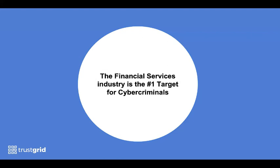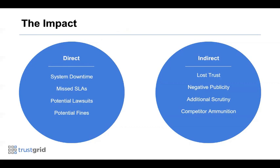The financial services industry and fintech are the number one target for cybercriminals, and have been for many years. The direct impacts of breaches — downtime, missed SLAs with financial penalties, lawsuits, and regulatory fines — are tangible. But the indirect impacts can be even bigger: loss of customer trust, negative press, increased regulatory scrutiny, and losing future deals due to the FUD handed to competitors can be felt for years after a breach occurs.